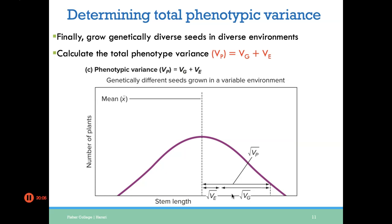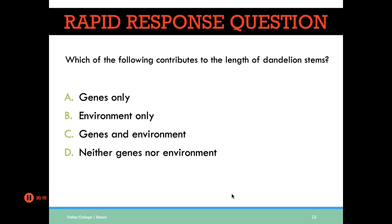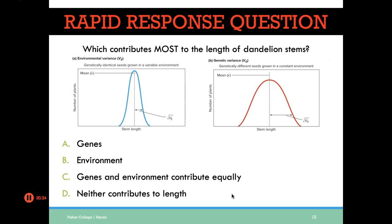For the exam, you won't be asked to calculate variance, but you might be asked to look at a graph. Which of the following contributes to the length of dandelion stems? The answer is C: genes and environment. Which contributes most? Genes play a bigger role — when you grow genetically identical seeds in a variable environment you see very little variance, compared to when you grow genetically diverse seeds, you get a lot of variance. That means genes have a lot to do with it.